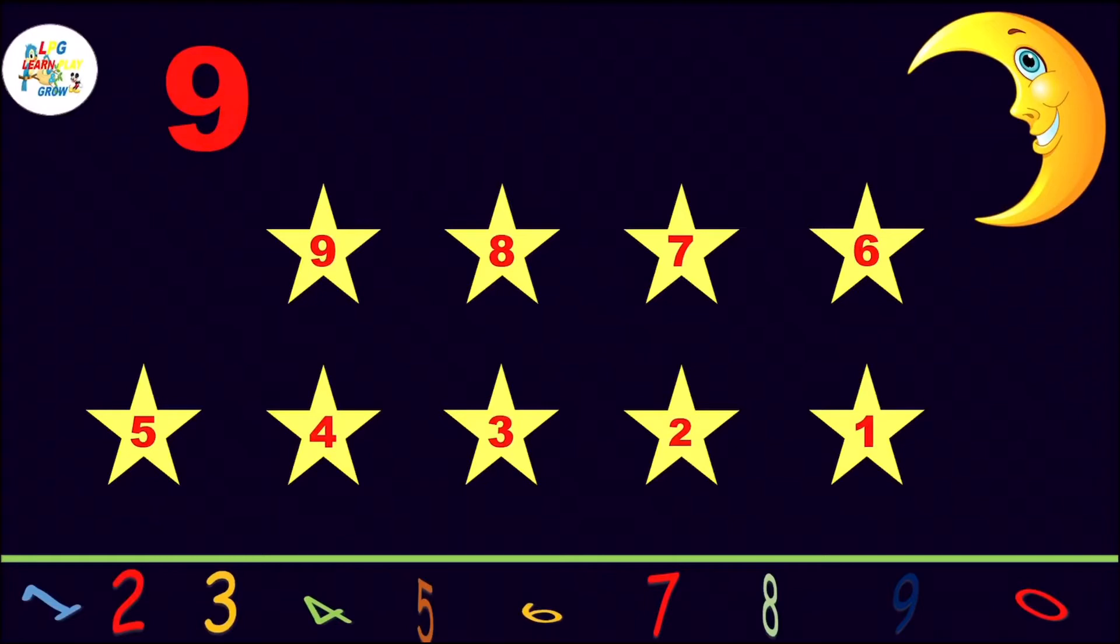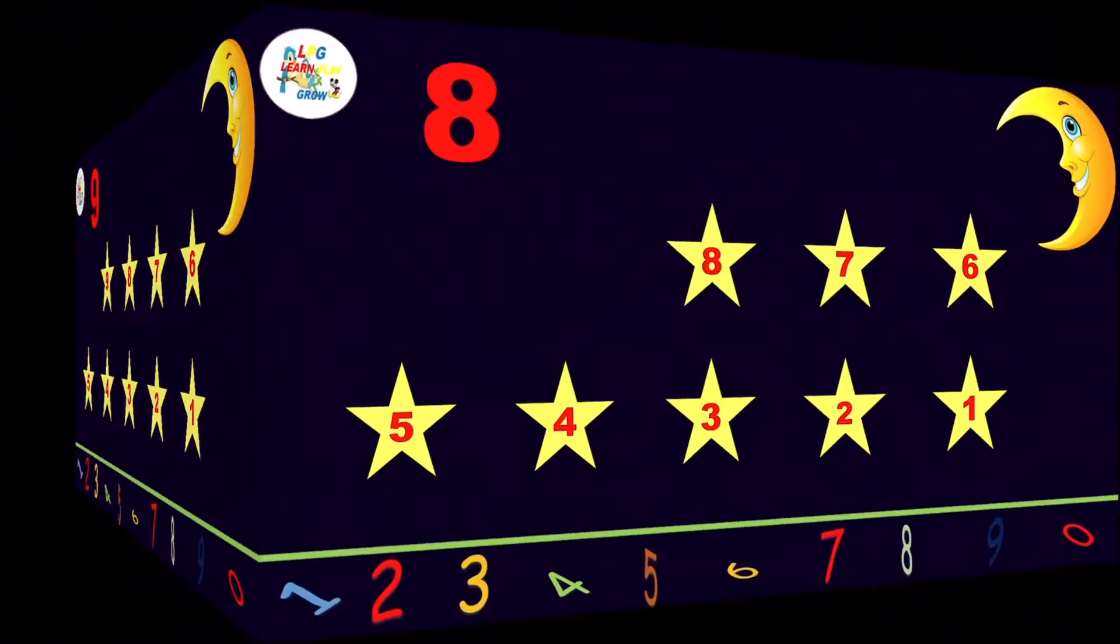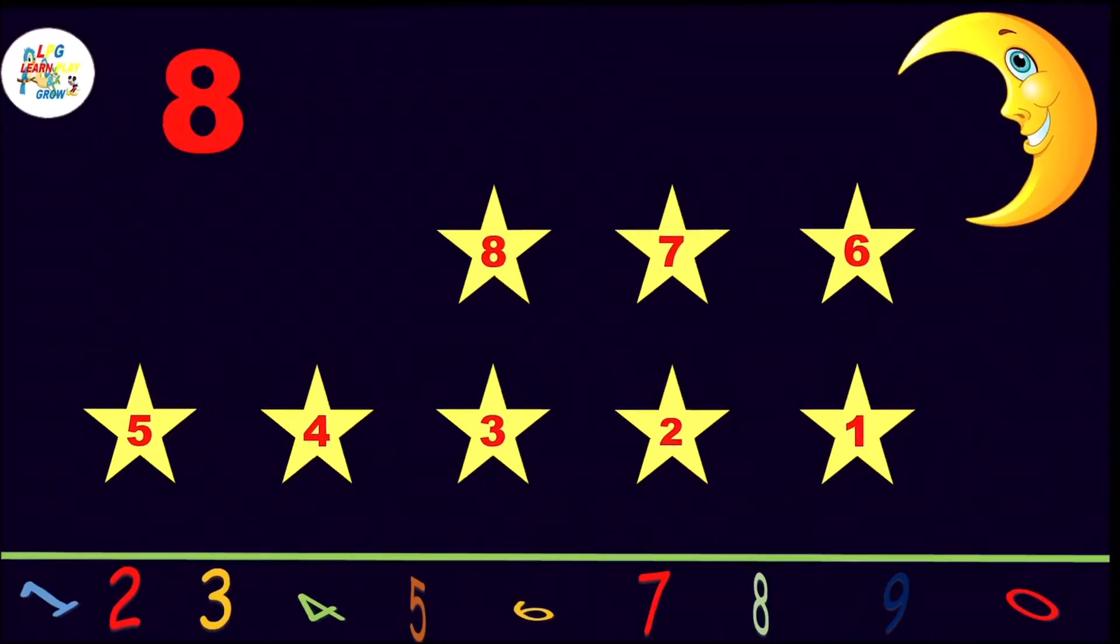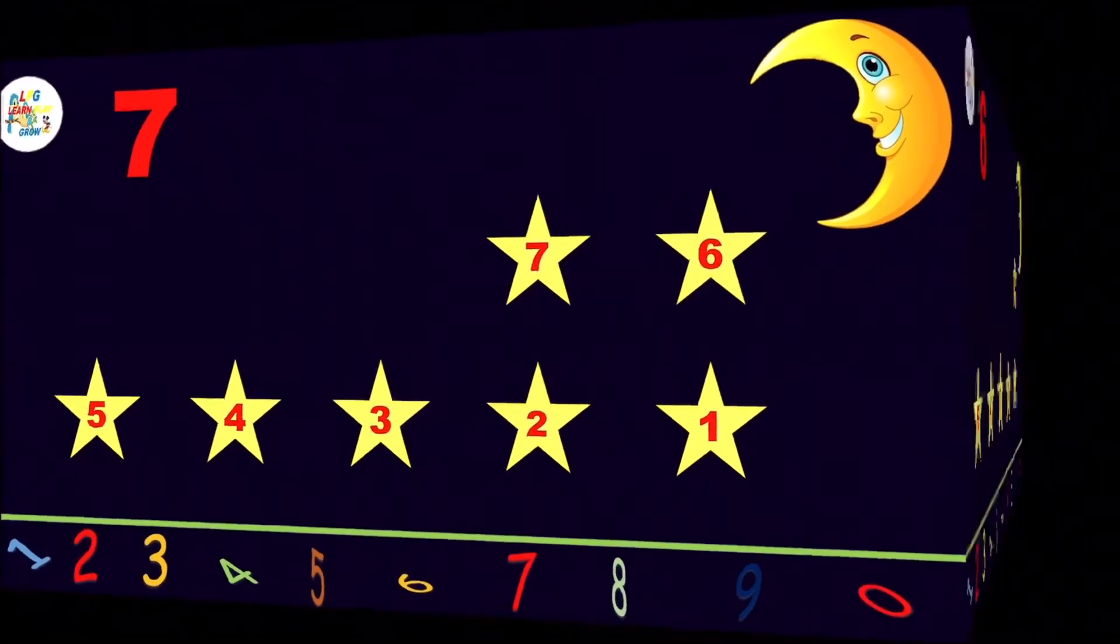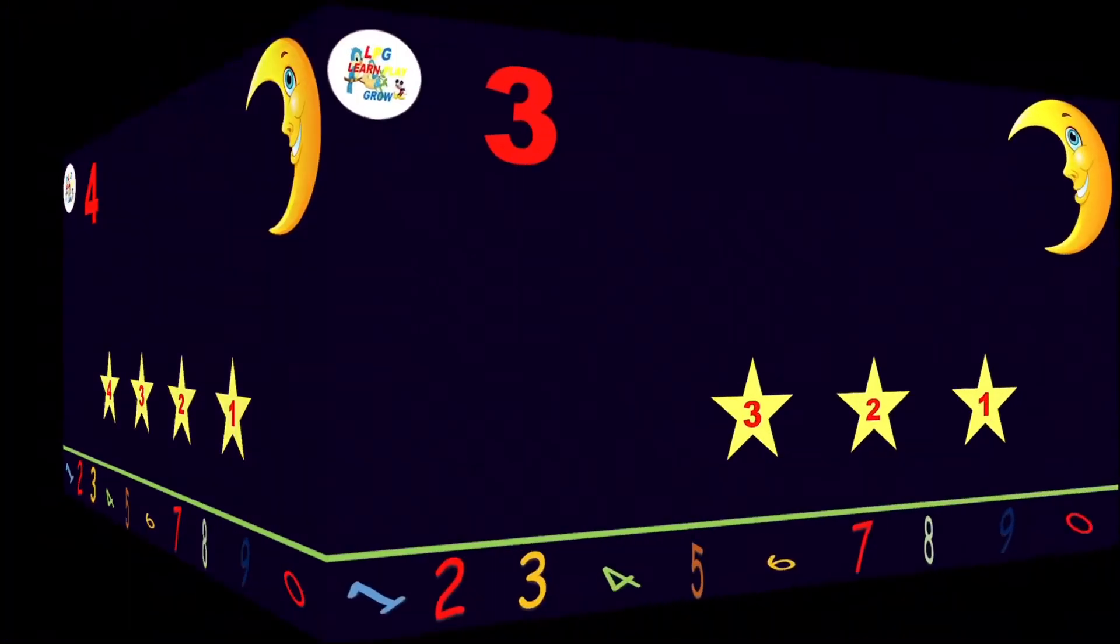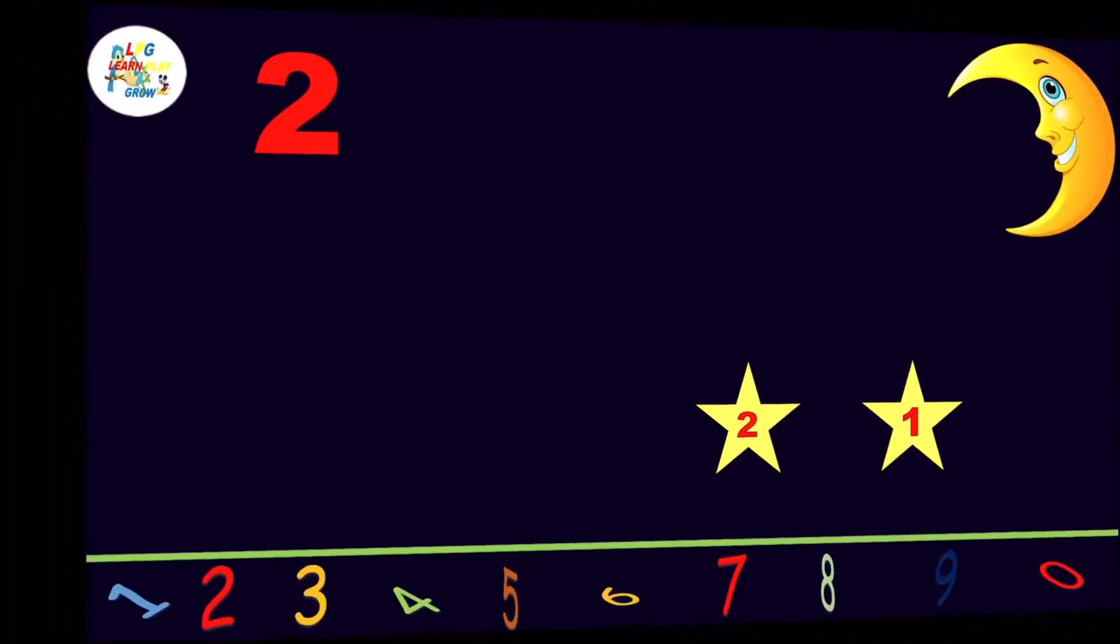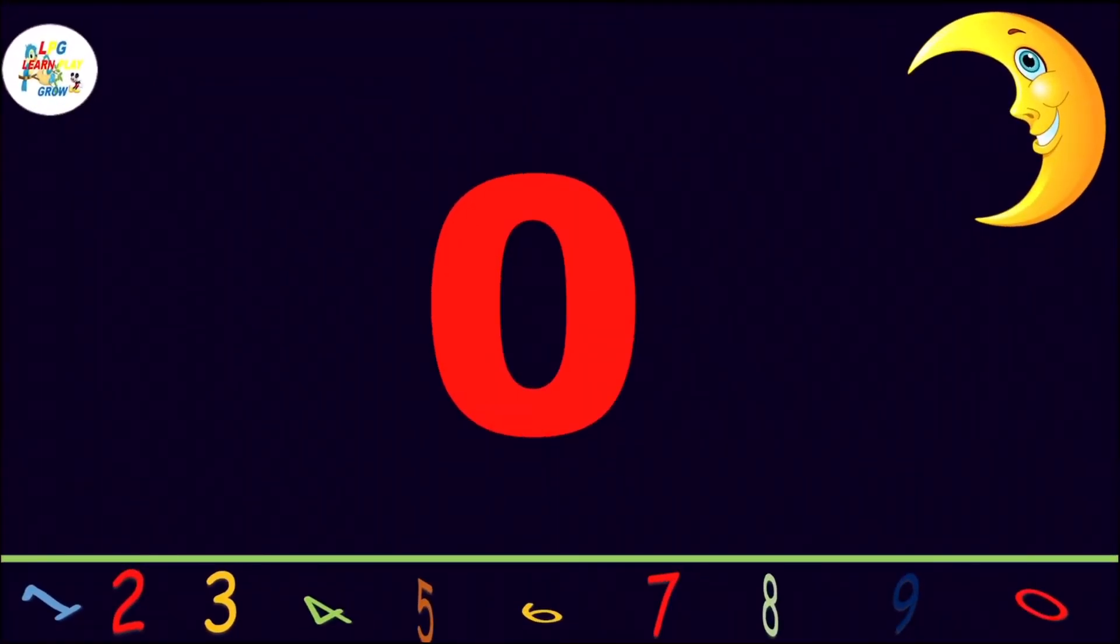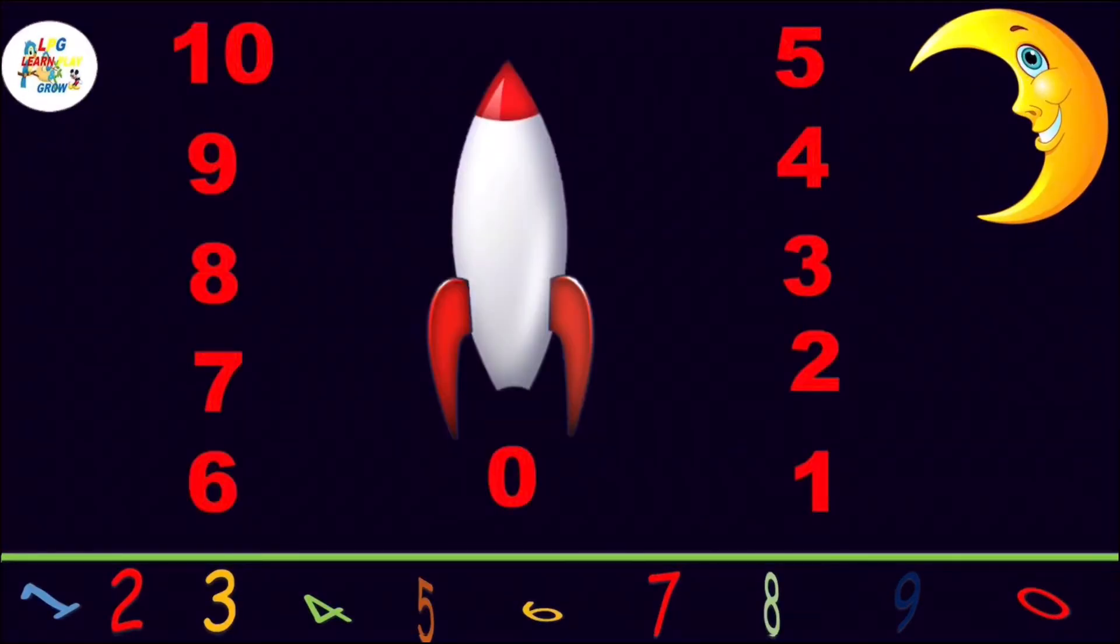One star is going for sleeping, remaining stars are nine. One more star is going, remaining stars are eight, seven, six, five, four, three, two, one. Oh, no stars are here, it means zero.